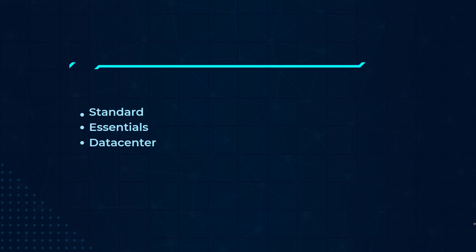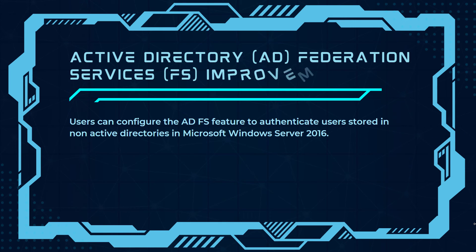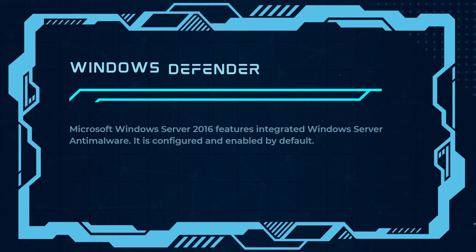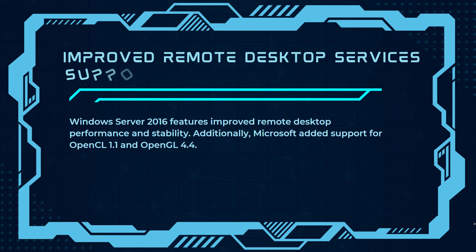Moving on to Windows Server 2016, the first notable feature is Active Directory Federation Services (ADFS) improvements, allowing users to configure ADFS to authenticate users stored in known Active Directories. Another major feature was the integration of Windows Defender — this version featured integrated Windows Server malware protection, configured and enabled by default. There was also improved Remote Desktop Service support, with better performance and stability, plus added support for OpenCL 1.1 and OpenGL 4.4.